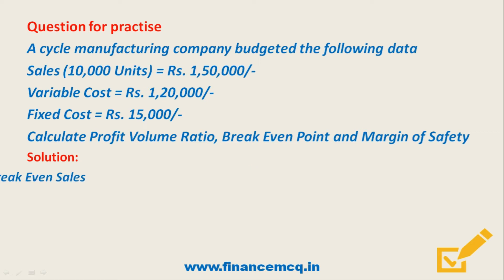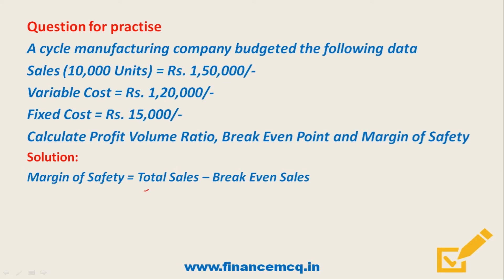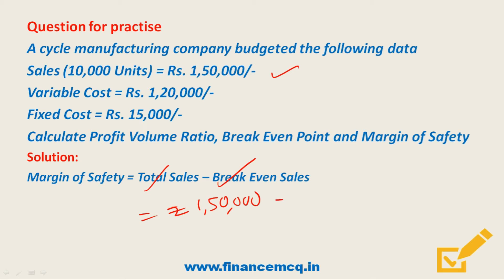Next, we calculate the Margin of Safety. The formula is Total Sales minus Breakeven Sales. Total Sales = ₹1,50,000 and Breakeven Sales = ₹75,000. Therefore, Margin of Safety = ₹1,50,000 minus ₹75,000 = ₹75,000. With this example, the concept of marginal costing should be more clear.